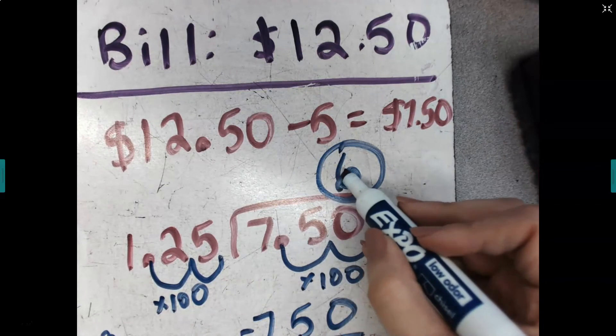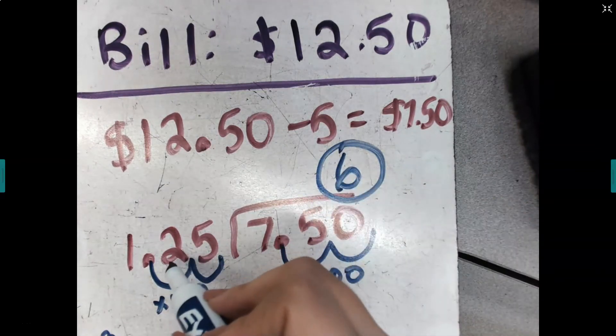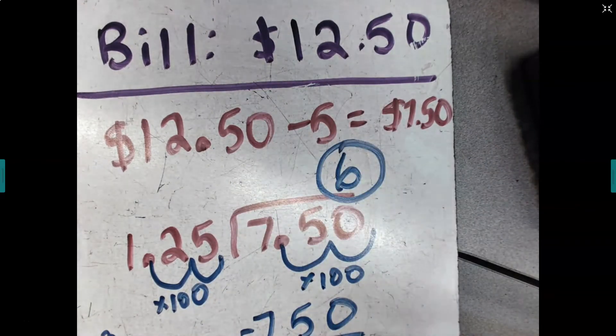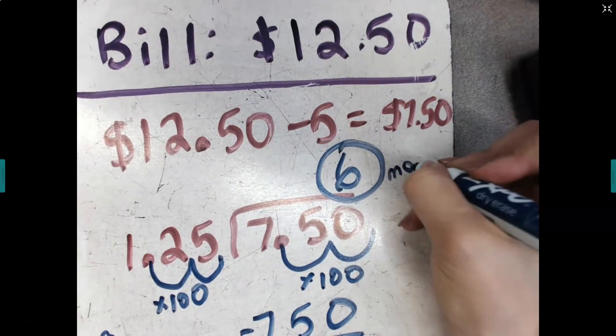So that means I would be doing 6 times $1.25 to get the total, $7.50, and then adding back that $5 membership fee, and there's my bill, $12.50. So my answer here is 6 movies.